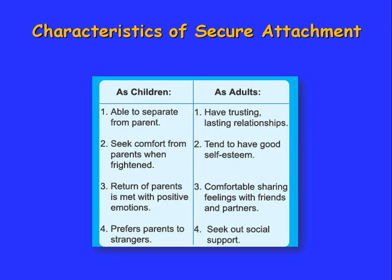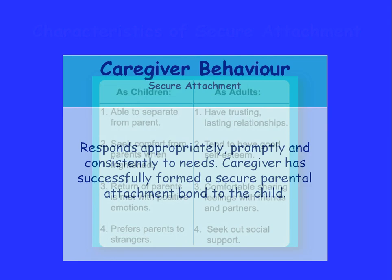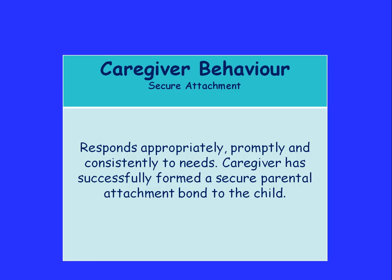The characteristics of secure attachment: as children we are able to separate from parents, which leads us as adults to have lasting and trusting relationships. When parents return, we are met with positive emotions, and the theory tells us that in adult life we are comfortable sharing feelings with friends and partners. This all depends on the caregiver's behaviour — the caregiver must respond appropriately, promptly and consistently to the needs of the child, and must have successfully formed a secure parental attachment bond to the child.